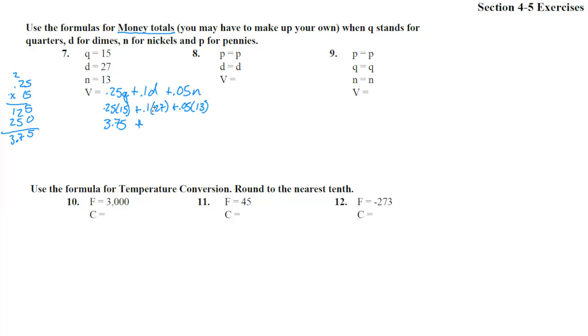So either way, 3.75 plus you got 27 dimes, that's $2.70, and 13 nickels. 12 times 5 is 60 cents, so this would be 65 cents. So let's add those all together. 7 plus 7 is 14. 1 plus 3 is 4, plus 2 is 6. So we get 6.40, and then 65 cents onto that. 0 plus 5 is 5. 4 plus 6 is 0, carry a 1. So $7.05.